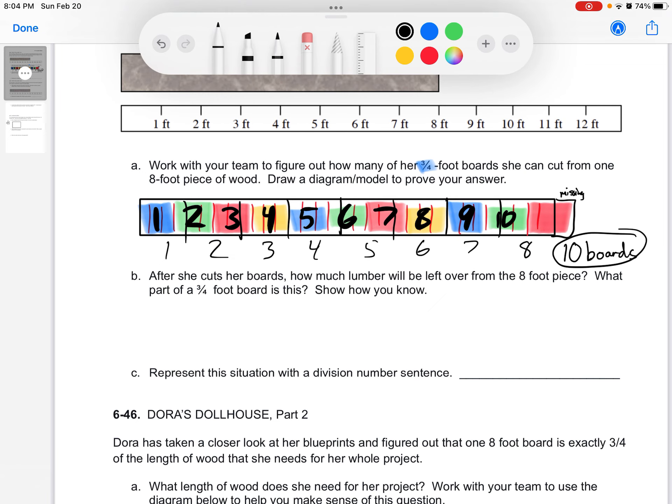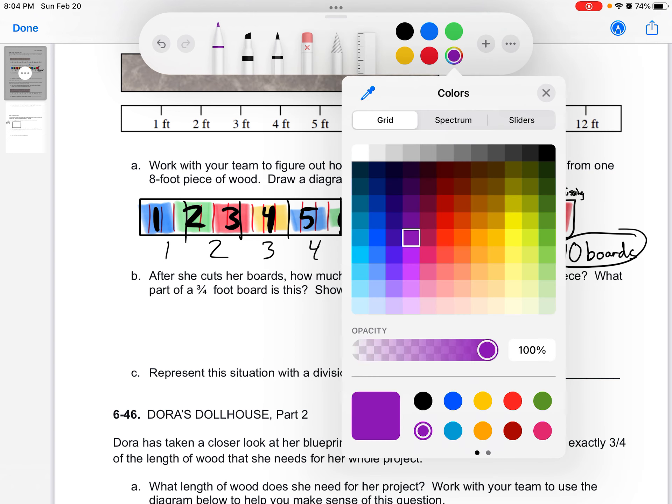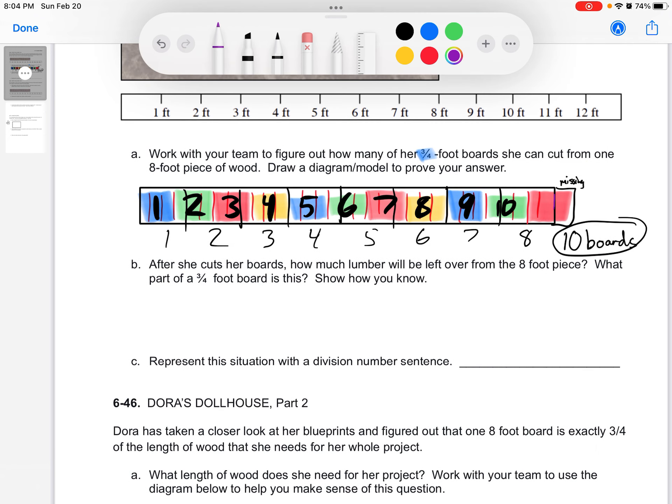After she cuts her boards, how much lumber will be left over from the eight-foot piece? Well, that's this, right? Let me use a different color. Let's use this. That right there is what that will be, how much is left over. And that is one-half of a foot. What part of a three-quarter foot board is this? That's an important part for us to understand.